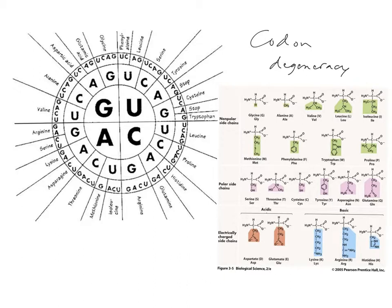We can see here, for example, UCU, UCC, UCA, UCG — those all code for serine. That's codon degeneracy, and you can see that with a lot of these different ones.